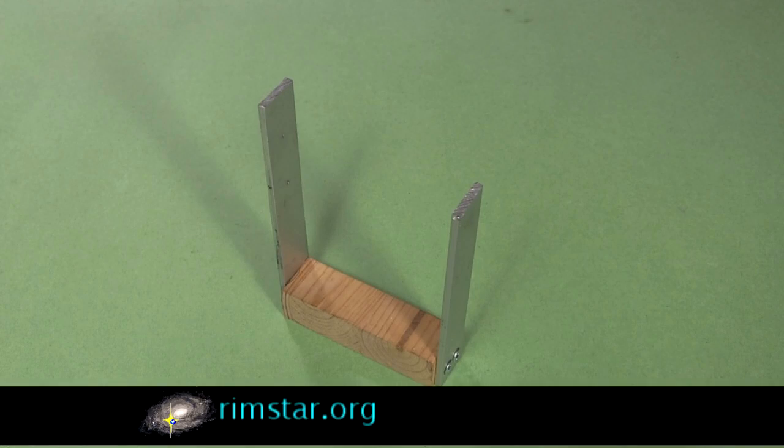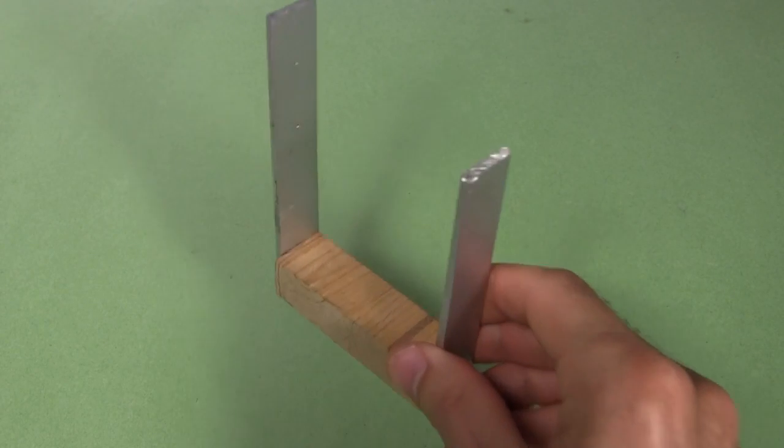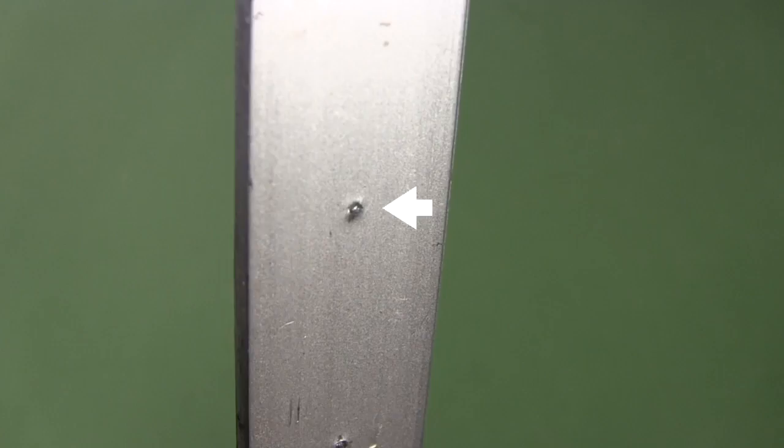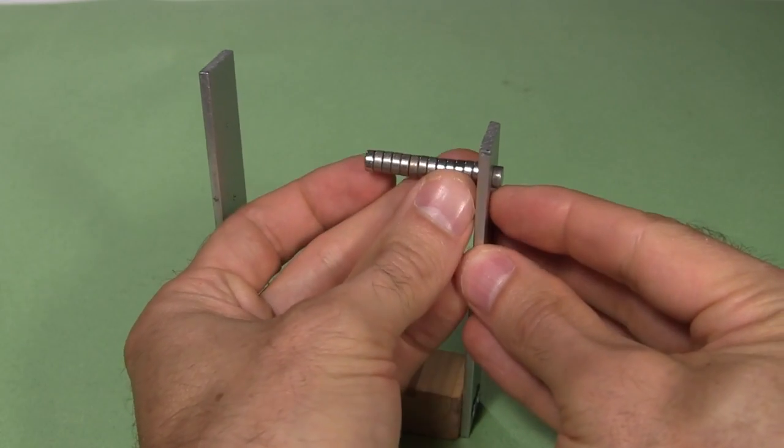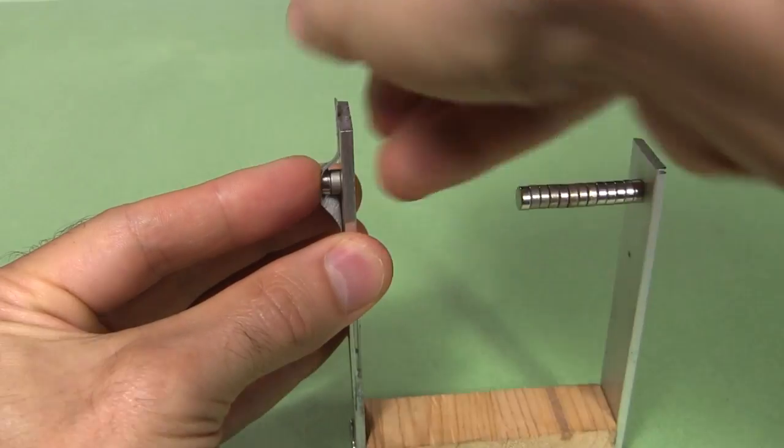For the stator, I've made this stand with scrap wood and two stiff scrap aluminum bars. In this bar I've made a tiny indentation near the top. I attached some neodymium magnets to one bar, and taped some more to the other bar.